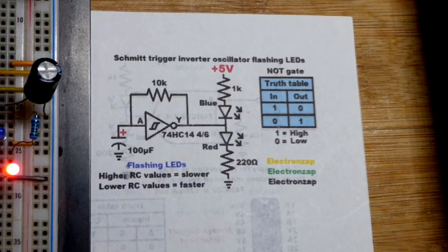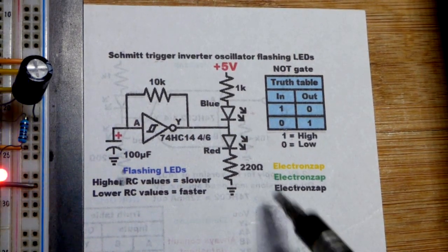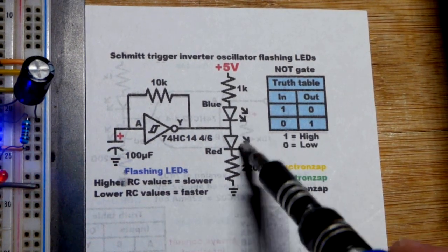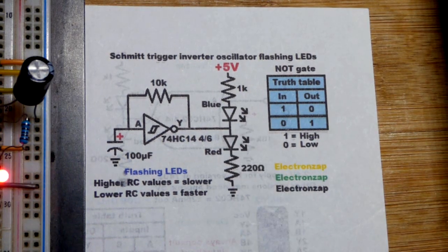So now this is the schematic diagram for our NOT gate Schmitt trigger astable. The LEDs alternate right there.